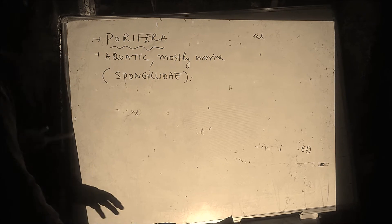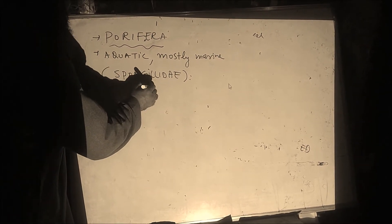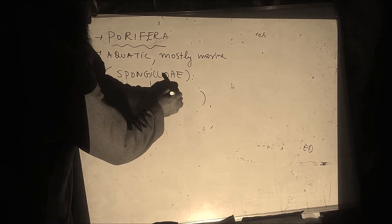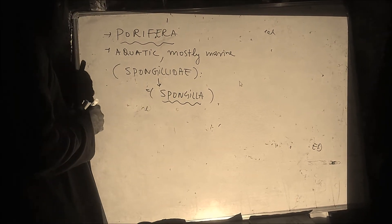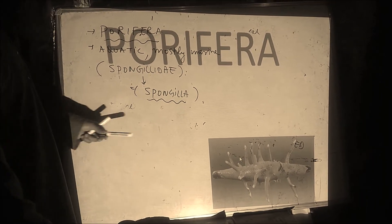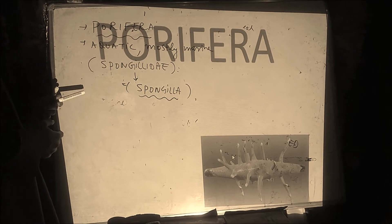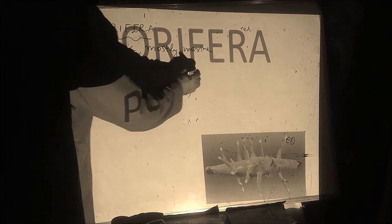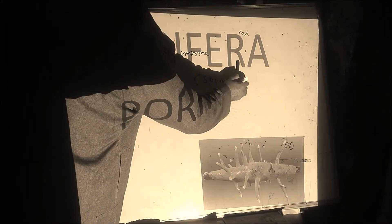This is the family of sponges. You might know this animal, which is known as Spongilla. Spongilla is commonly known as a freshwater sponge. These Porifera are also called sponges.